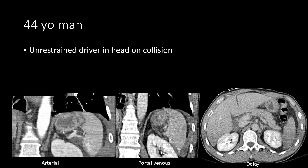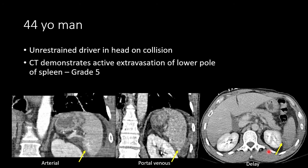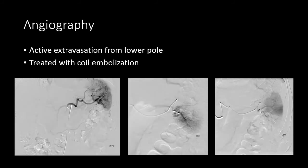In another case, an unrestrained driver in a motor vehicle collision. On the arterial phase, we see multiple foci of high density along the inferior pole of the spleen, along with fluid in the peritoneal space around the spleen. On the portal venous phase, those areas of density become more prominent. On the delayed phase, those regions become less prominent but more amorphous. This was felt to represent active extravasation, and we may even see pooling in the perisplenic space. The patient was taken to angiography, where active extravasation from the lower pole of the spleen was confirmed and treated with coil embolization.